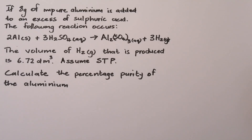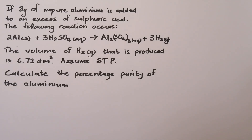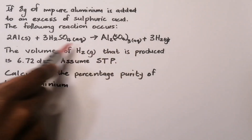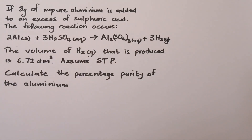So we're dealing with percentage purity — we're still doing stoichiometry. The example gives us eight grams of impure aluminium added to an excess amount of sulfuric acid. We have a balanced equation for that reaction, and they say the volume of hydrogen produced is 6.72 cubic decimeters at STP.